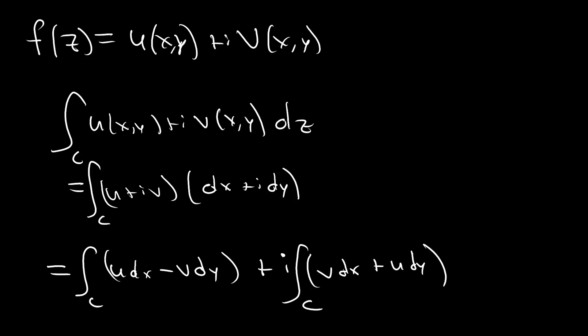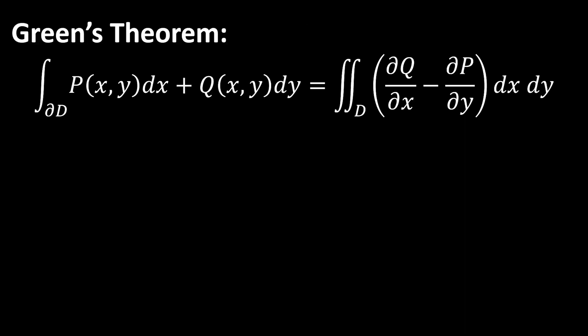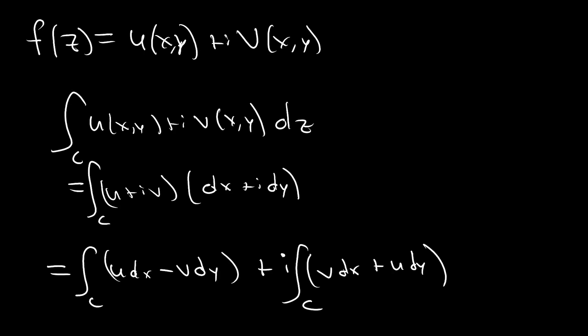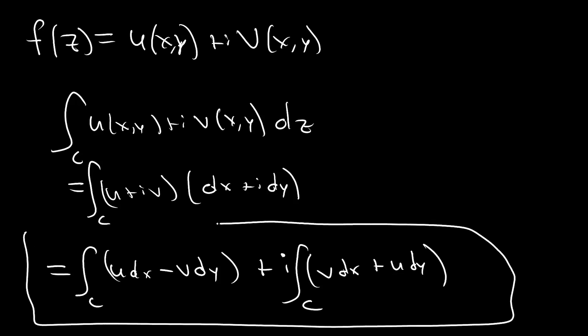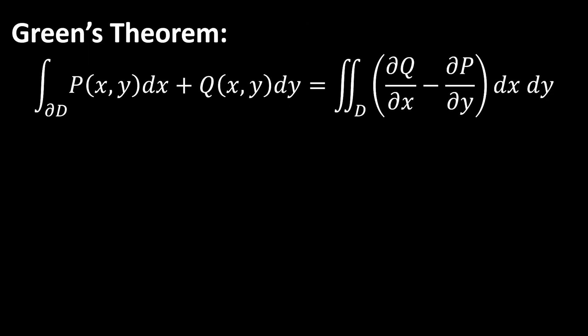So we really have two integrals to evaluate for the real component and two for the imaginary component. To do this, let's recall Green's theorem, which tells us that we can take a path integral and convert it to an area integral if it follows this form. This result right here tends to follow that form, so let's apply Green's theorem and convert everything over.